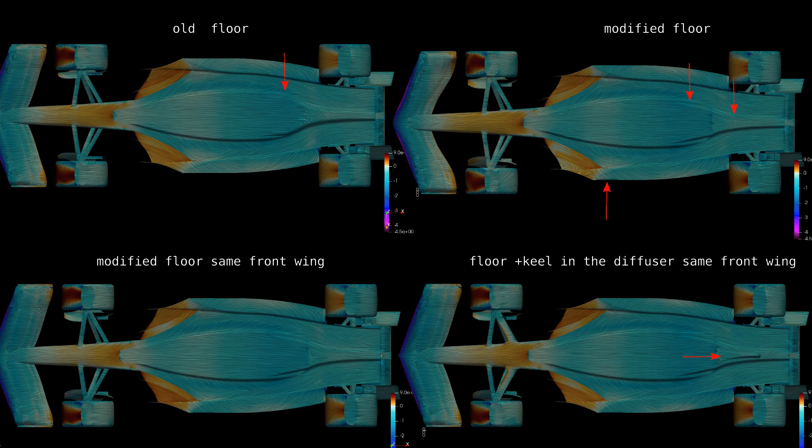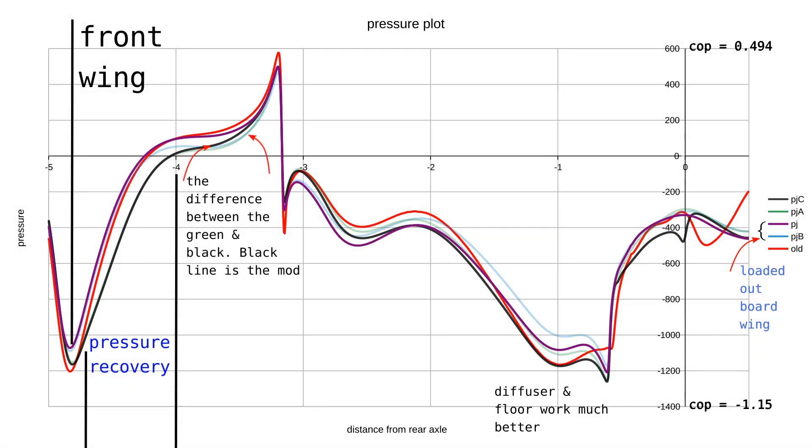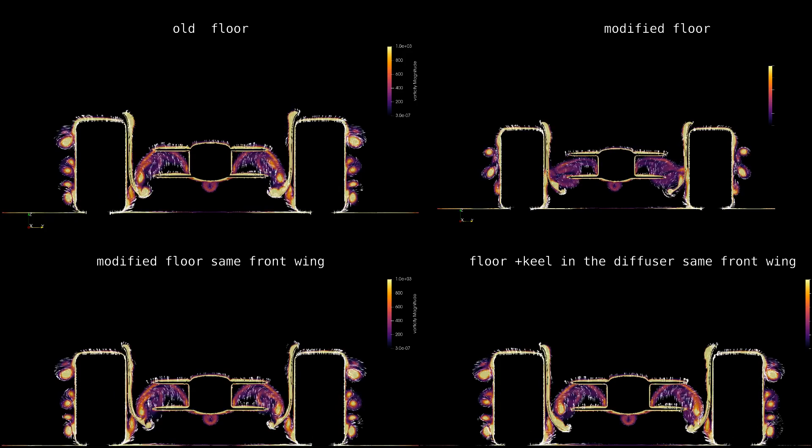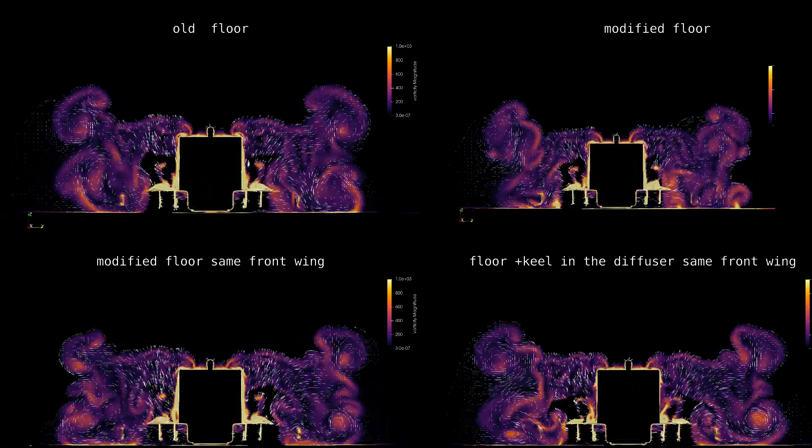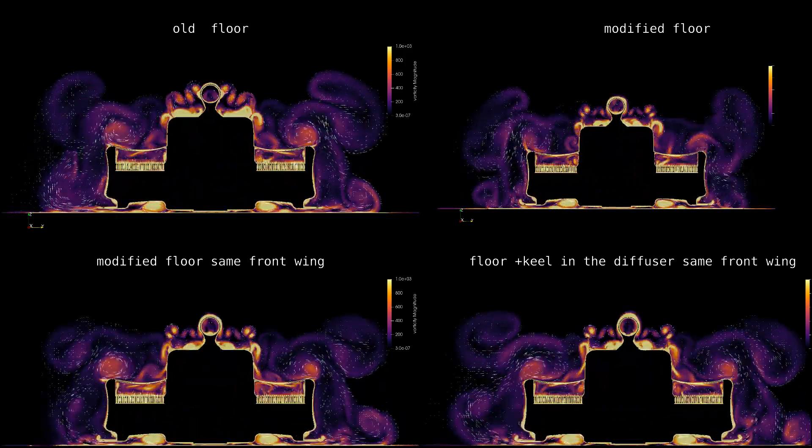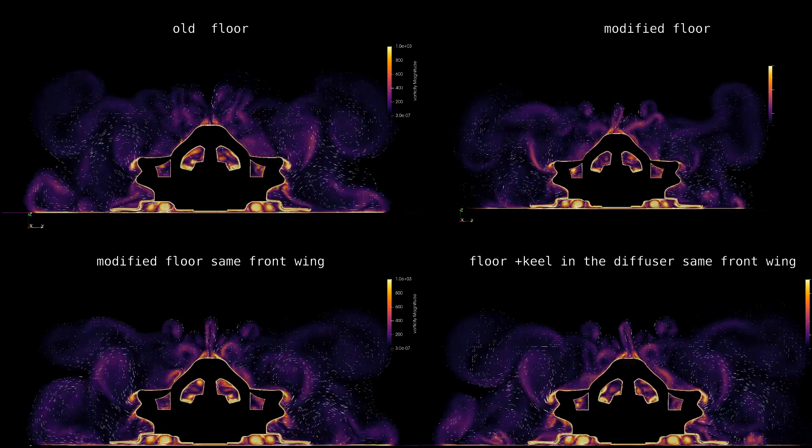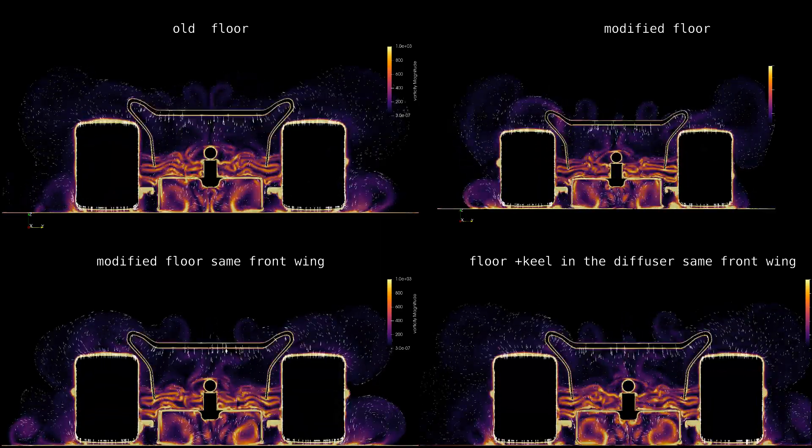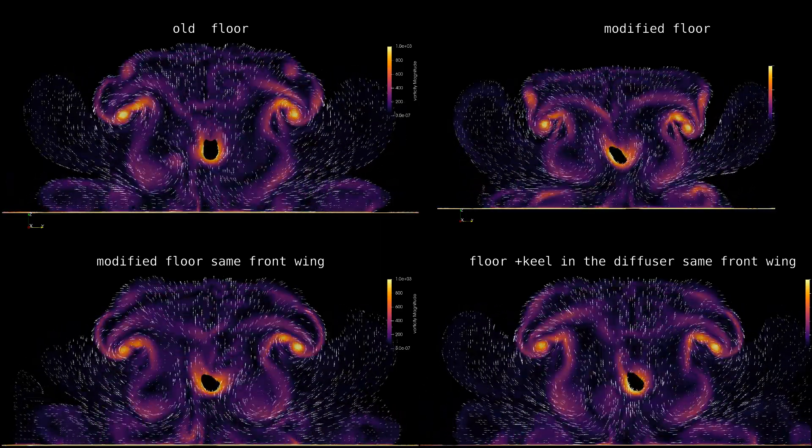Now speaking to the diffuser modification. The floor tunnel hasn't changed, but the central section expands less dramatically. The plot shows the expansion on the old model affects the floor immediately before the diffuser. The thing with these floors is that they have a flow structure running their length. Maintaining these vortices is hugely important, because having them collapse means the same thing as flow detaching off an airfoil. The lift will just disappear.